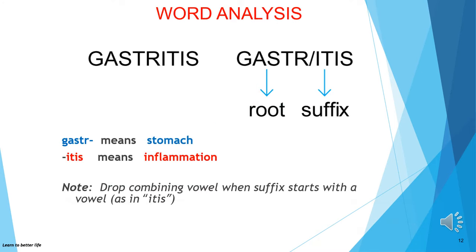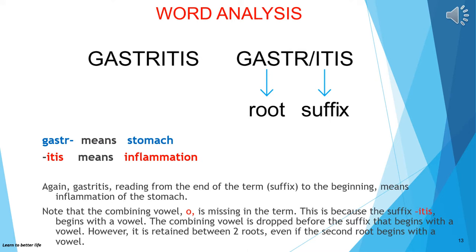Let's analyze gastritis. Gastr- is the root meaning stomach, and -itis is the suffix meaning inflammation. Please note: drop the combining vowel when the suffix starts with a vowel, as in -itis. So gastritis, reading from the end of the term to the beginning, means inflammation of the stomach. The combining vowel O is missing because the suffix -itis begins with a vowel. The combining vowel is dropped before a suffix that begins with a vowel.